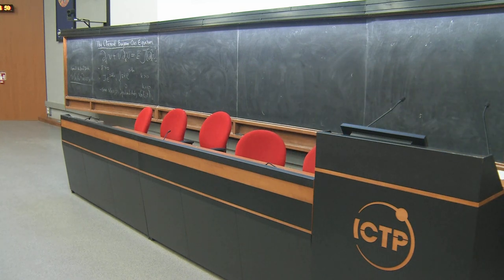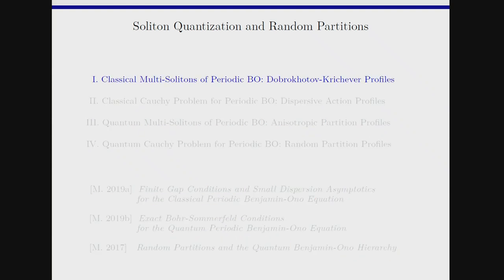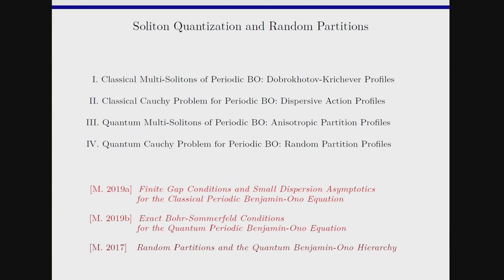Now let's look at the outline of the talk. First, I'll tell you about some special solutions to that equation — these are the periodic analogs of multisolitons, also known as multiphase solutions. Then I'll tell you about the problem of studying this equation with arbitrary initial data. After that, I'll tell you the quantum versions of each. The main goal of the talk, part three, is to arrive at a non-random partition. After that, I can state some results for random partitions. This material appears in three works of mine on the arXiv.